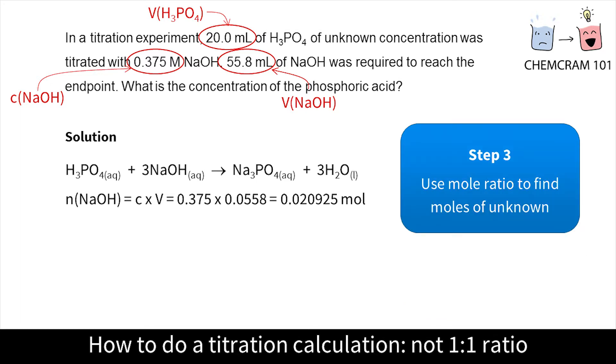The next step is to use the mole ratio to work out the moles of the unknown, the phosphoric acid. The mole ratio comes from the numbers in front of the substances in the balanced chemical equation. We have three moles of sodium hydroxide to one mole of acid so we need to divide the moles of sodium hydroxide by three to get the moles of acid.